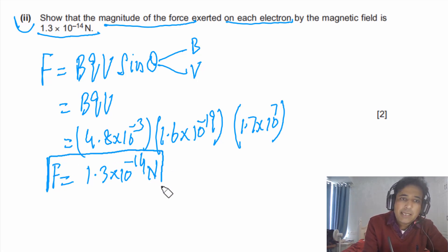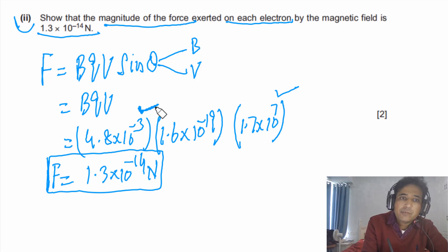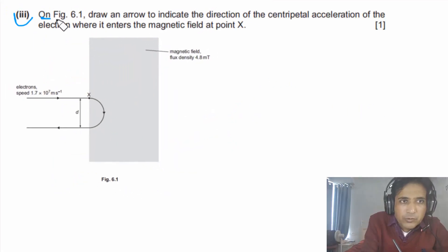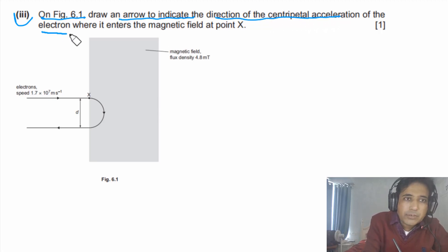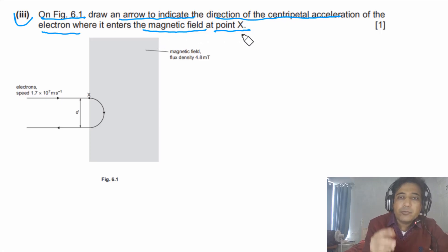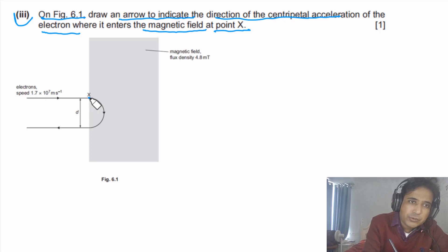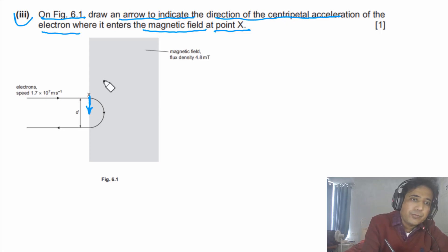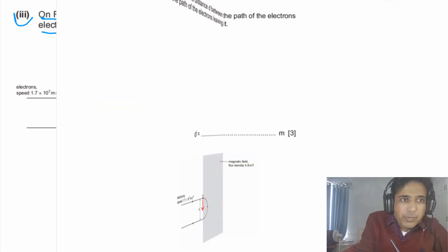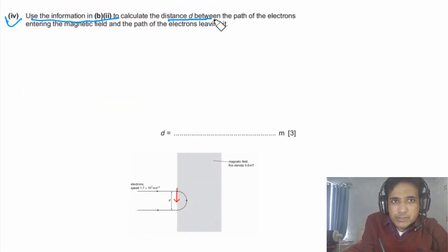Simplifying gives F = 1.3 × 10⁻¹⁴ N. This is the force on a single electron at this speed in this magnetic field. Part b3 says: on Figure 6.1, draw an arrow to indicate the direction of the centripetal acceleration of the electron where it enters the magnetic field at point X. The magnetic force on the particle at point X is downward — this is the resultant force, and since acceleration is in the direction of the resultant force, the centripetal acceleration also points downward at that point.